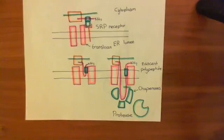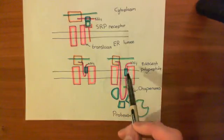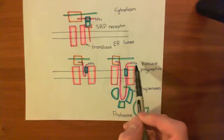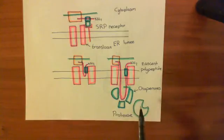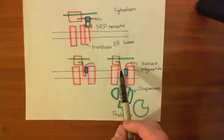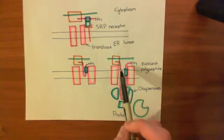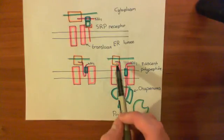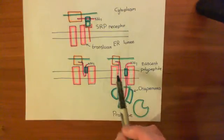Now let's discuss proteins which span the membrane multiple times. We'll begin with the ones which are going to have their amino terminus on the cytosolic side. You're going to feed this polypeptide through and you're not going to get a protease coming and cleaving off this signal sequence. What will happen is if you want to get more membrane-spanning domains, you will get a transfer signal coming down and binding to the translocon.